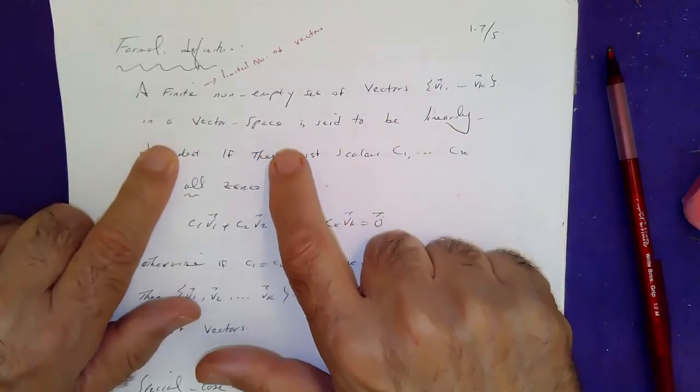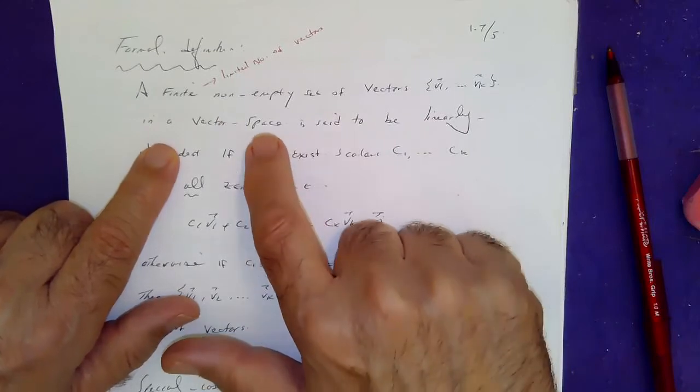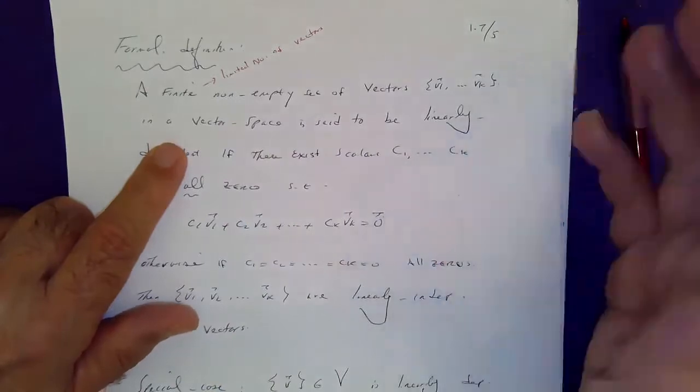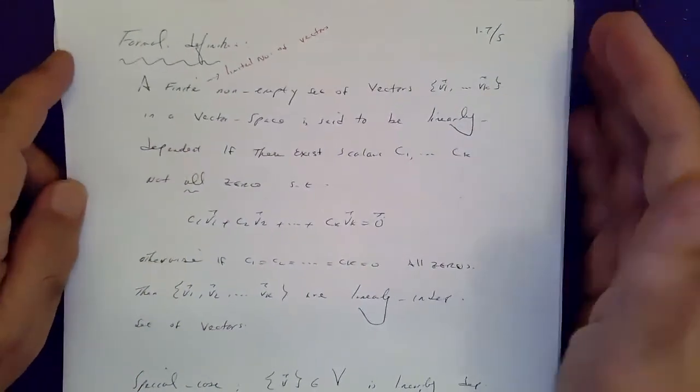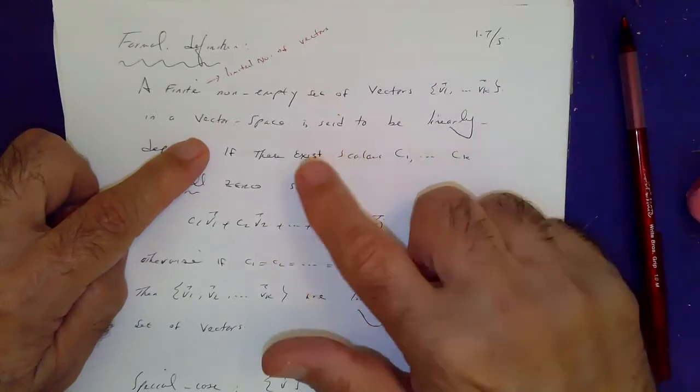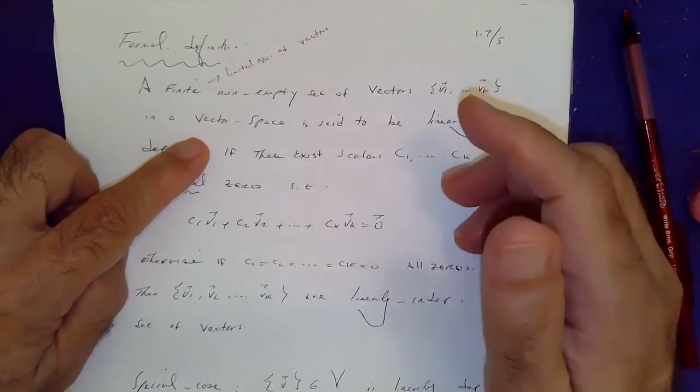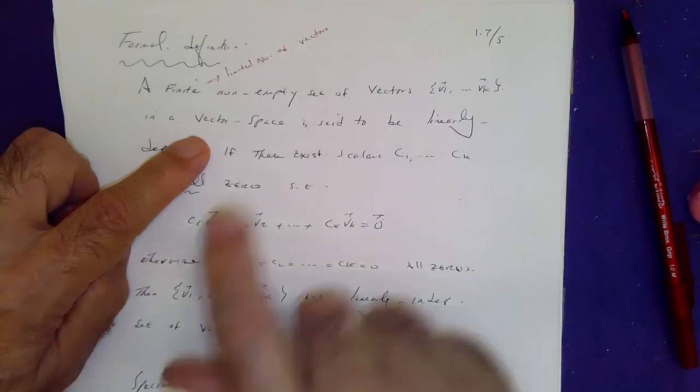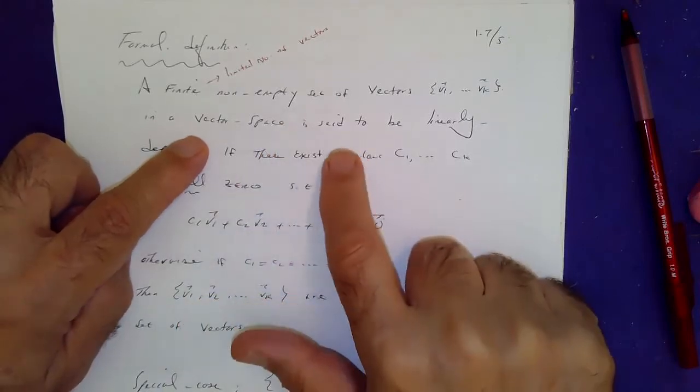In a vector space. Remember, we're going to talk about vector space a little bit later in the course. If you happen to be in R3, that's your vector space. In R2, that's your vector space. Vector space can be set of pairs of numbers, or triples, or it could be set of functions, matrices, and so on.